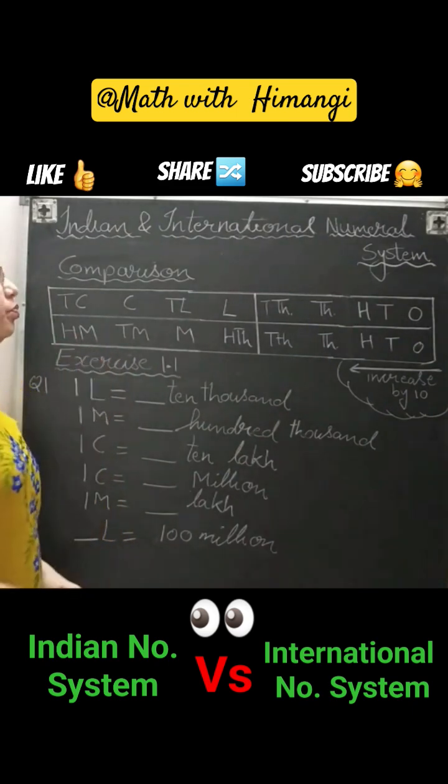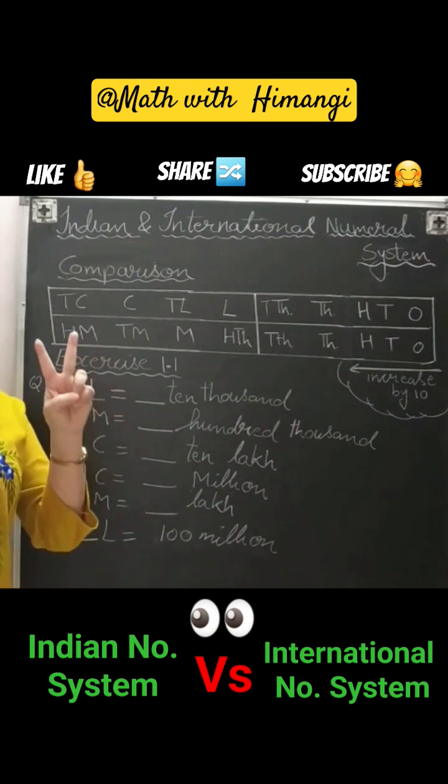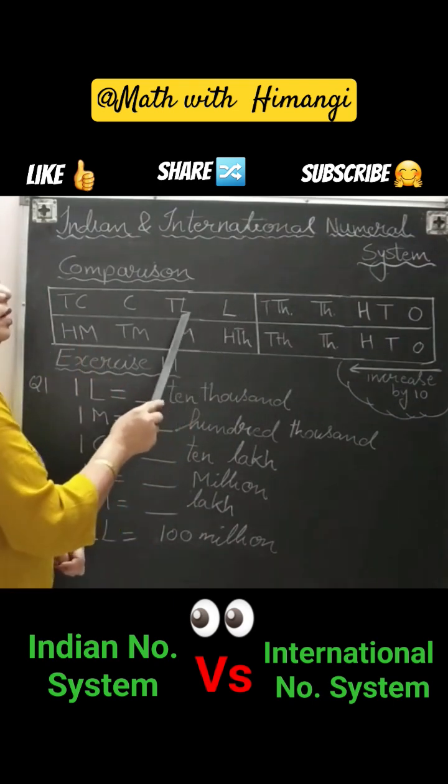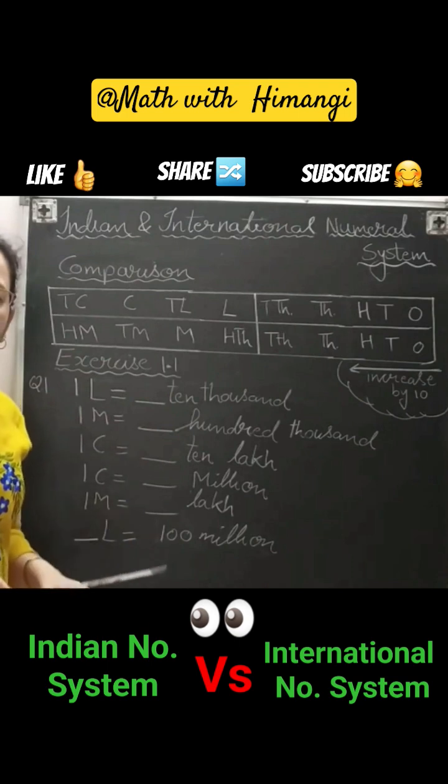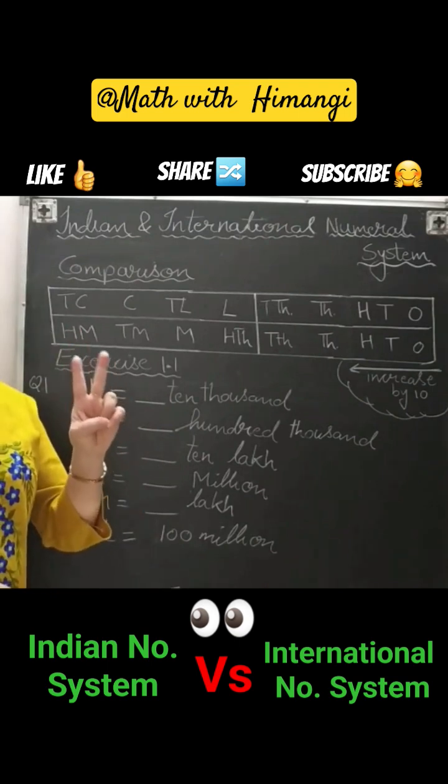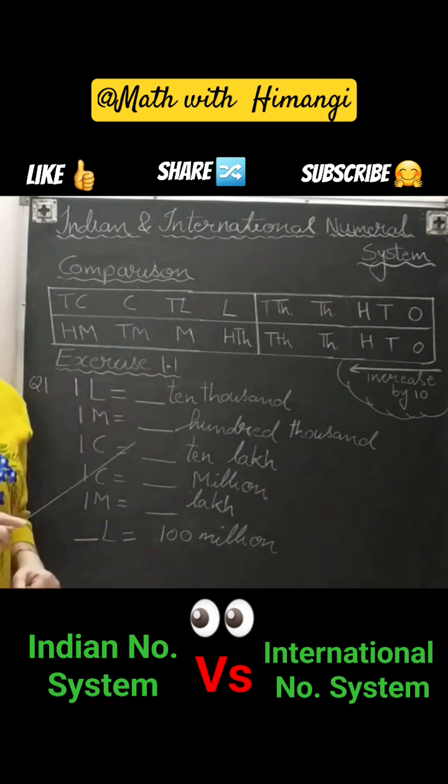And thousand, ten thousand - give a pause. Second comma will come after two digits. Lakh, ten lakh - give a pause. Again, next comma will be after two digits: crore, ten crore.